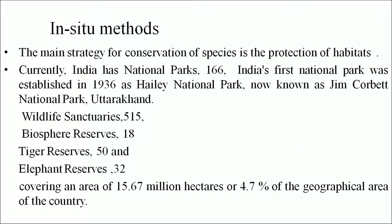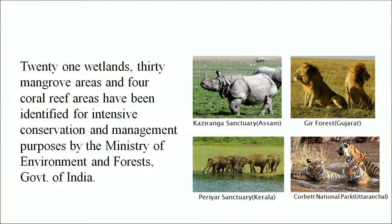For in-situ methods, the main category for conservation of species is the protection of habitat. Currently India has about 166 national parks. India's first national park was established in 1936 as Haley National Park, now known as Jim Corbett National Park, Uttarakhand. There are 515 wildlife sanctuaries, 18 biosphere reserves, about 50 tiger reserves and 32 elephant reserves, covering an area of 4.7 percent of the geographical area of the country. Additionally, 21 wetlands, 30 mangrove areas and 4 coral reef areas have been identified for intensive conservation and management by the Ministry of Environment and Forests, Government of India.